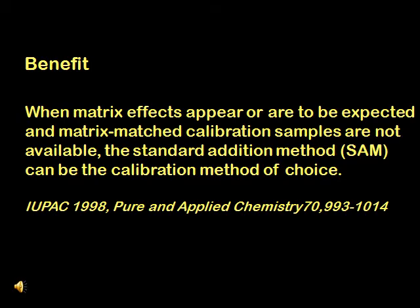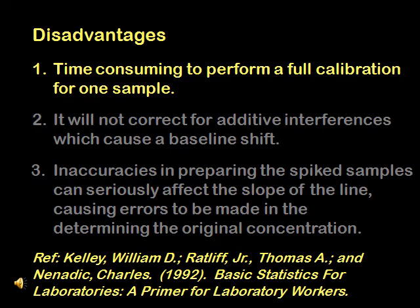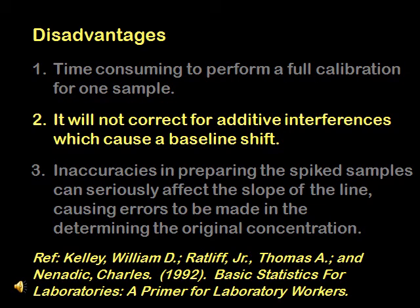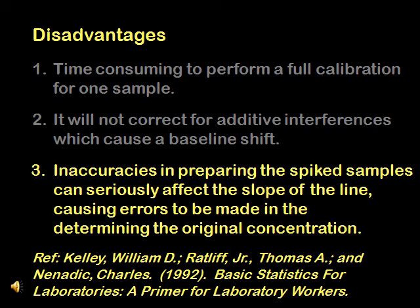A benefit of running MSA is when matrix effects appear or are to be expected and matrix matched calibration samples are not available. Then the laboratory has an option of running the standard addition method. Some of the cons in running an MSA are: first, it is time consuming to perform a full calibration for one sample; second, it will not correct for additive interferences which cause a baseline shift; and third, inaccuracies in preparing the spike sample can seriously affect the slope of the line, causing errors to be made in determining the original concentration.